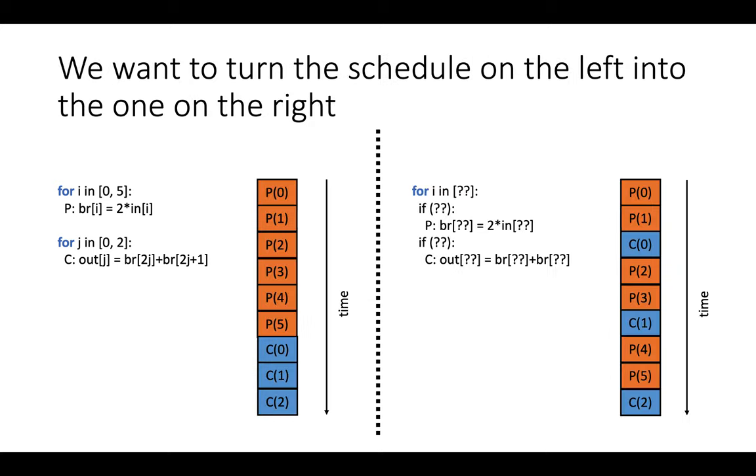The challenge that we have is that we are given a program which has the schedule shown on the left where the first loop runs to completion and then the second loop starts, which amounts to a schedule like this one where time goes from top to bottom, earliest to latest. We produce every single value of this statement p from 0 to 5 and then we produce every single value in the consumer loop nest from 0 to 2 inclusive.